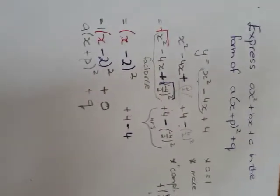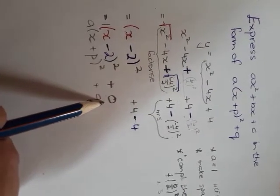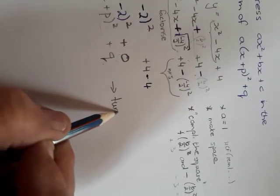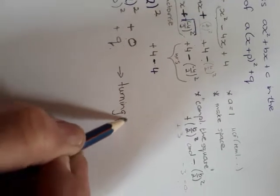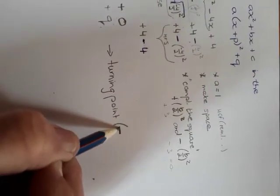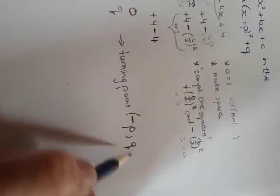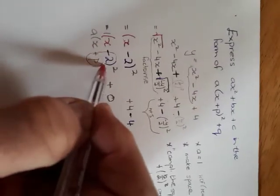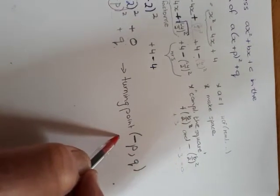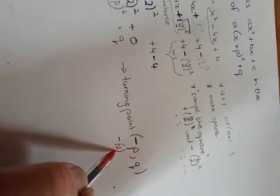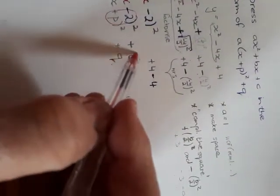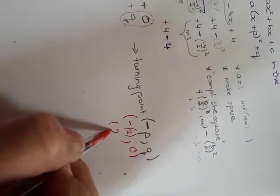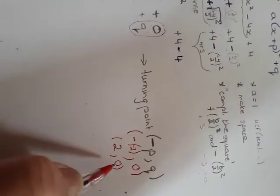And now importantly, when you have expressed this expression in that format, then you can find the turning point, and the turning point is, importantly, minus P and Q. So if we now look, P has the value of negative 2. So we must find the negative of negative 2 for P. And then the value for Q in this case is 0. Negative negative 2 gives me a positive 2, 0. This is the turning point.